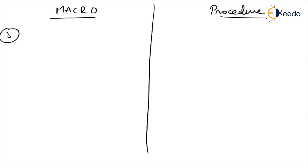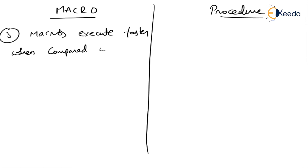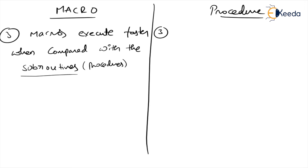Third point: macros execute faster compared with subroutines, because they have a short sequence — less than 10 instructions. Whereas subroutines, which are nothing but procedures, are slower compared to macros.